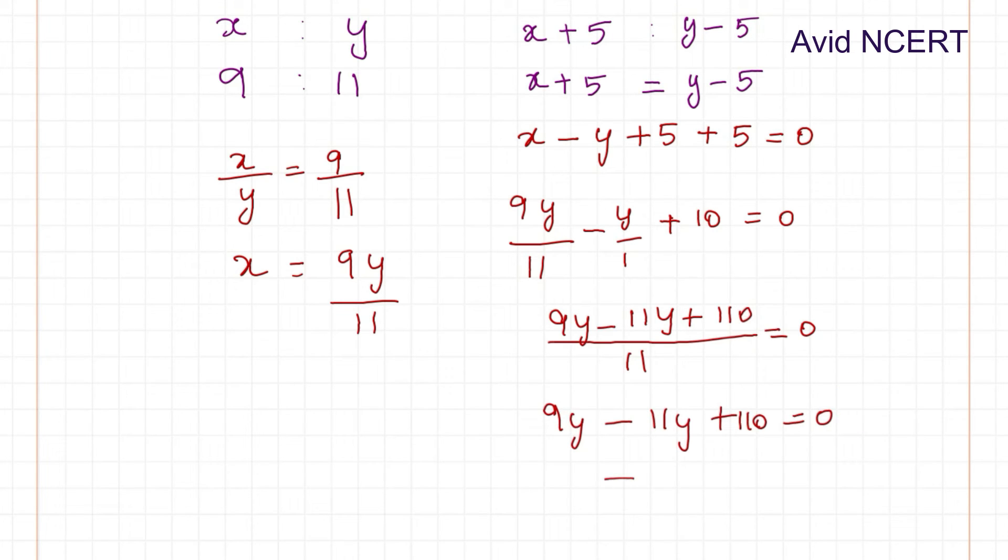You can use any simplifying method you want. 9y minus 11y is minus 2y equals minus 110. Taking the 110 to the other side, minus minus gets cancelled and y equals 55.